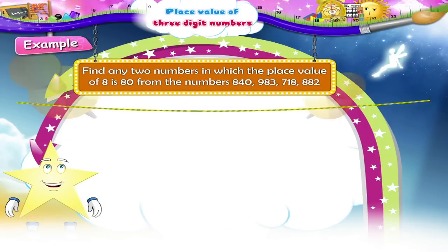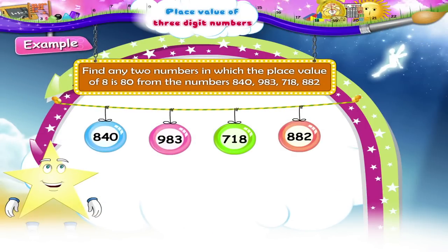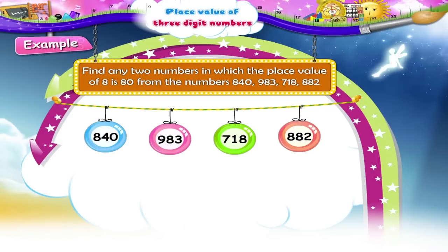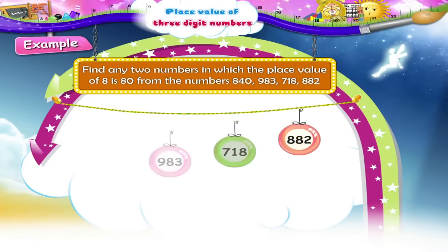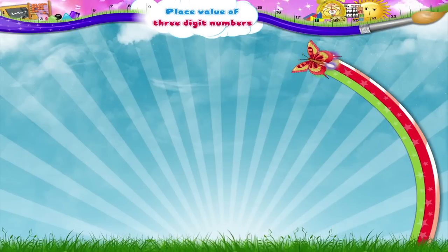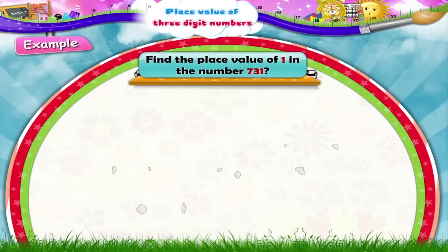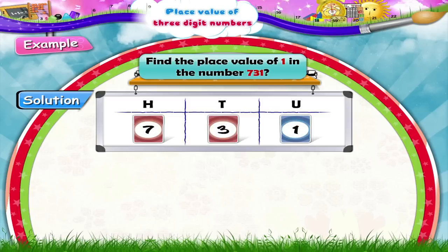Starry, can you find any two numbers in which the place value of eight is eighty? Yes! In the number nine hundred and eighty-three and eight hundred and eighty-two, the place value of eight is eighty. In the next question, we have to find the place value of one. In the number seven hundred and thirty-one, digit one is in the units place, so its place value is one.